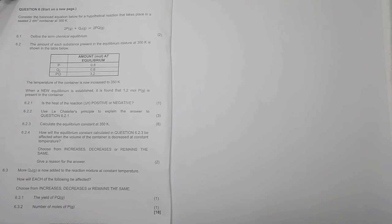So let's look at that question six. They say consider the equation below for a hypothetical reaction that takes place in a sealed two cubic decimeter container. So there's the hypothetical reaction. Of course, it does not exist. They say define the term chemical equilibrium. When we talk about chemical equilibrium, this is when the rate of the forward reaction is equal to the rate of the reverse reaction.